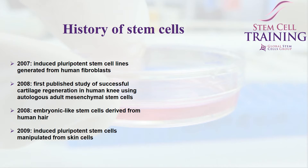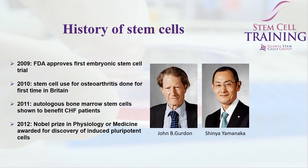Then, induced pluripotent stem cells came about, which are those that behave similar to an embryonic stem cell, but it was discovered that they could be made more pluripotent-like, and these were originating as adult stem cells. Then, in 2009, we had the first FDA approval of an embryonic stem cell trial, and in 2012, a stem cell scientist won the Nobel Prize for the discovery of induced pluripotent cells.